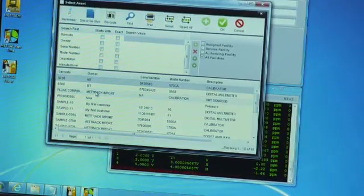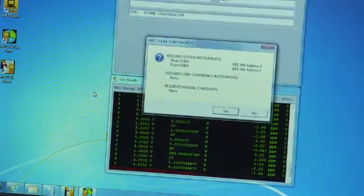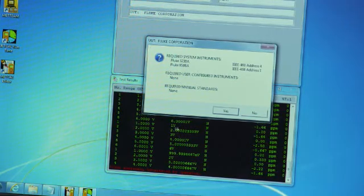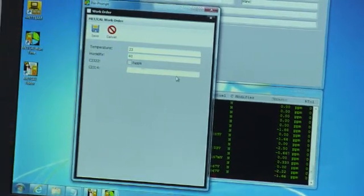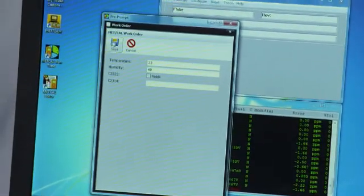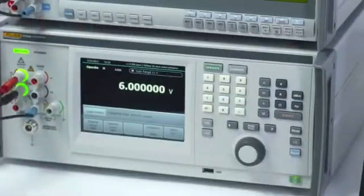The 5730A can be fully automated using MetCal calibration management software. Device mapping lets you replace an existing 5700A or 5720A in an automated calibration system without editing your library of procedures.